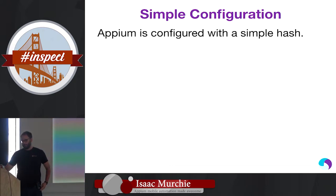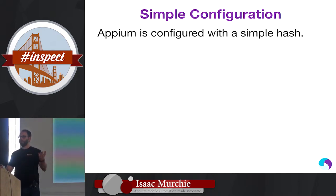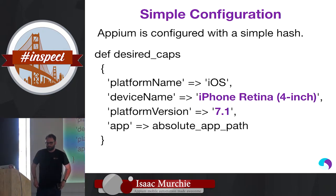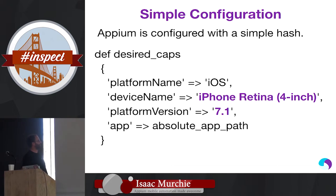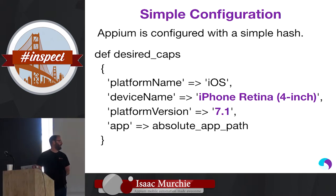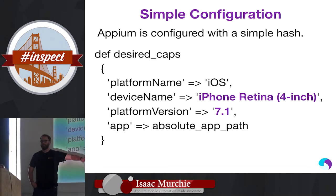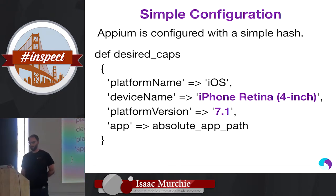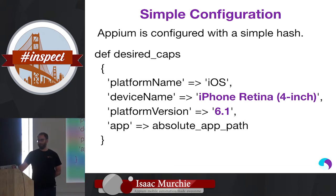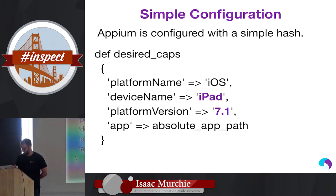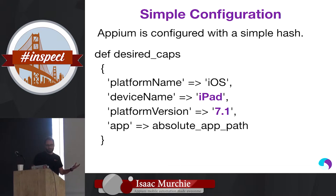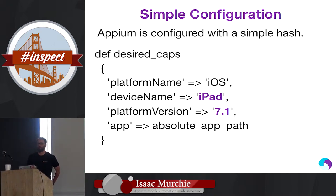The second part is configuration. Configuring what environment you want is sometimes difficult, but in Appium it's just a hash that gets turned into JSON and sent to the server. Say you want to run against a real device or a simulator that is an iPhone Retina running iOS 7.1 — you set the platform to iOS, the device to iPhone Retina, the platform version to 7.1, and specify your app. If it's not already on the device or simulator, it will install it for you. Changing to 6.1 or testing on an iPad is just one line change.